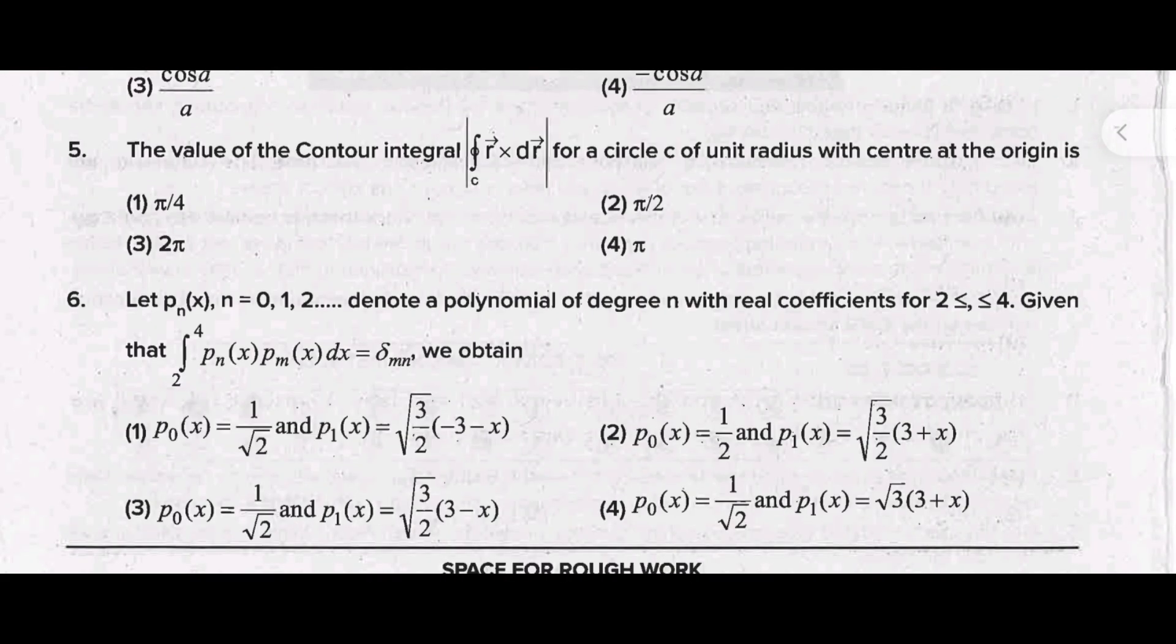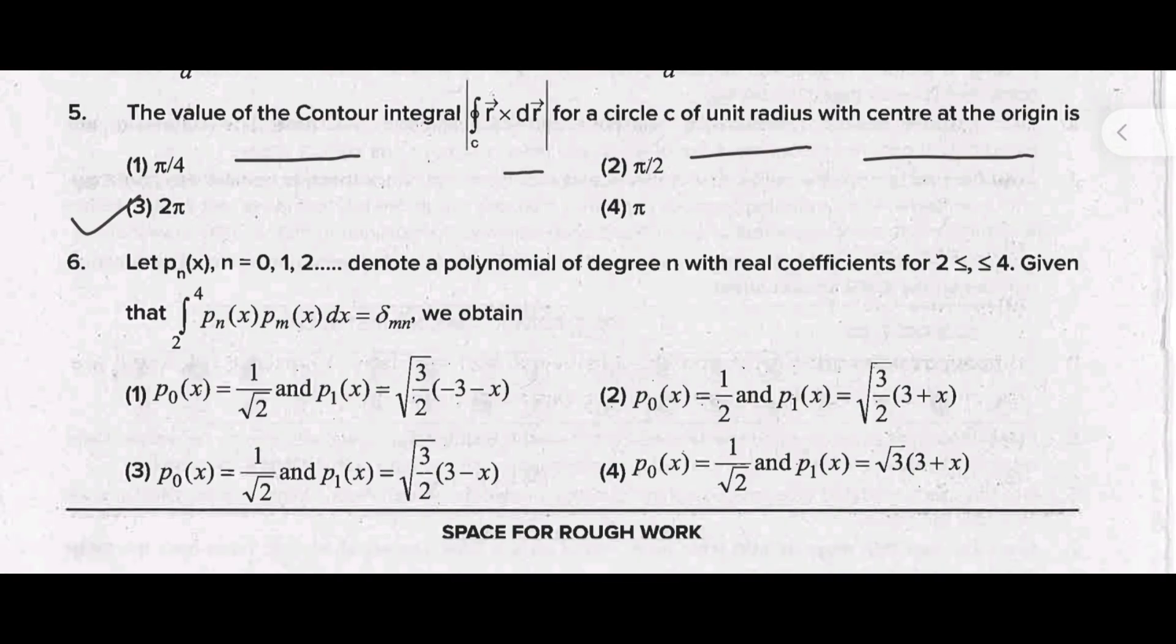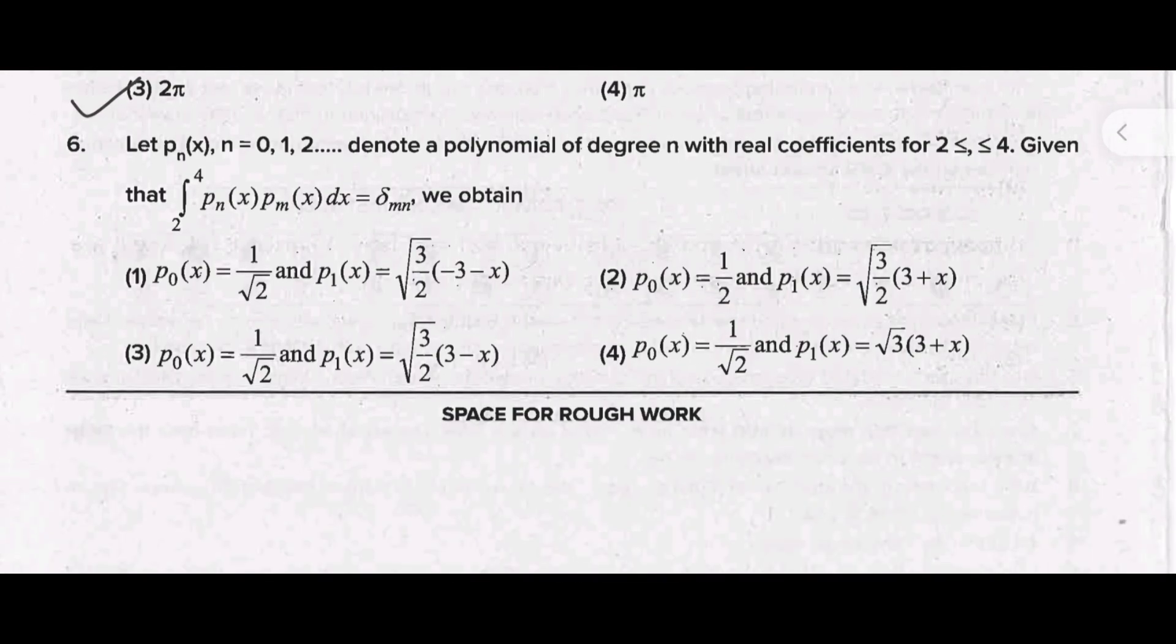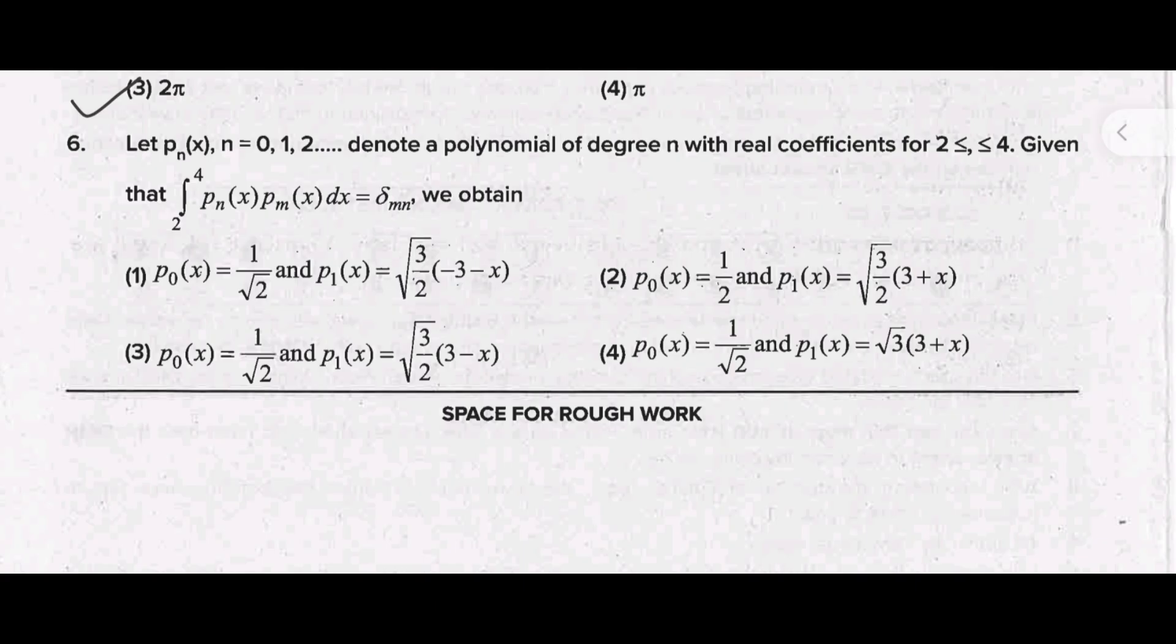The value of the contour integral, that is R into dr for a circle C of a unit radius which center at the origin is - the answer is option 3, 2π.